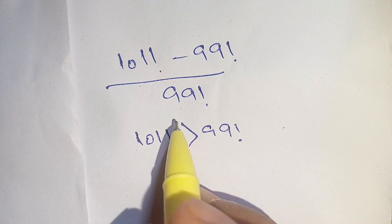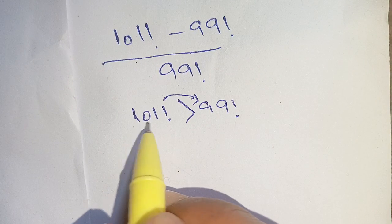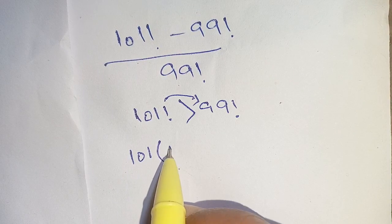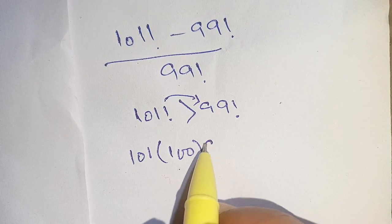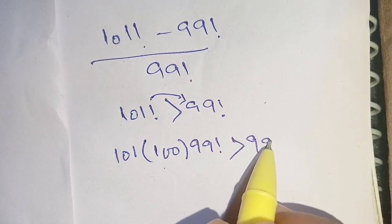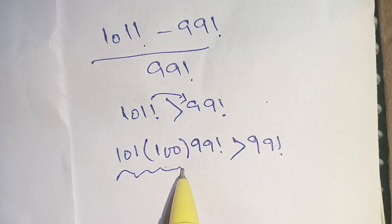Let us solve this. We can write down 101 factorial as 101 times 100 times 99 factorial. It is greater than 99 factorial. Now, in place of 101 factorial, we write down these terms.